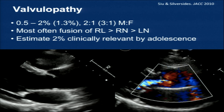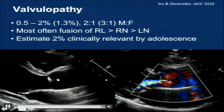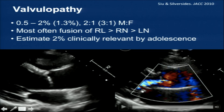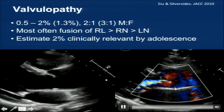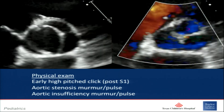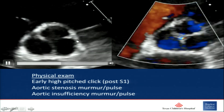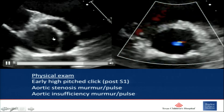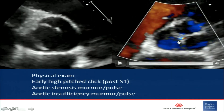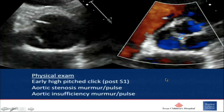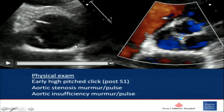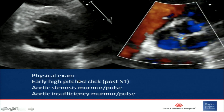On echocardiograms you can see eccentric closure of a thickened aortic valve, and this is an example showing aortic insufficiency in the parasternal long axis view. In the short axis view you can see fusion of the right and left commissural cusps with a slightly more stenotic opening. We also see the aortic insufficiency as the valve closes.